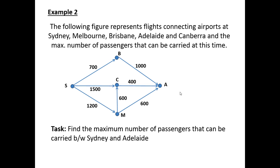A second example. We're looking at the flights connecting Sydney, Melbourne, Brisbane, Adelaide and Canberra and the maximum number of passengers that can be carried at this time. So the task is to find the maximum number of passengers that can be carried between Sydney, which is over here on our left, and Adelaide on the right.